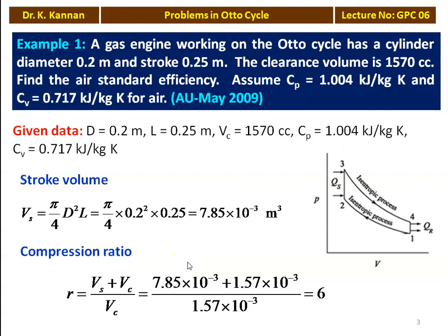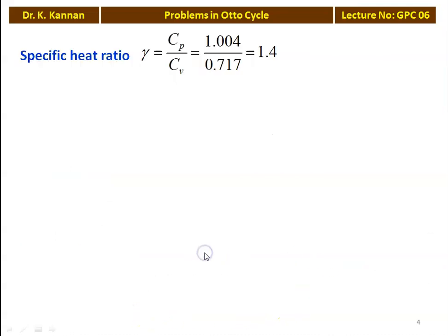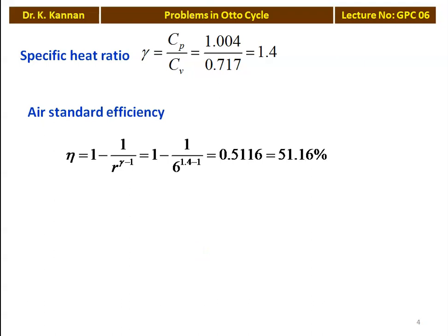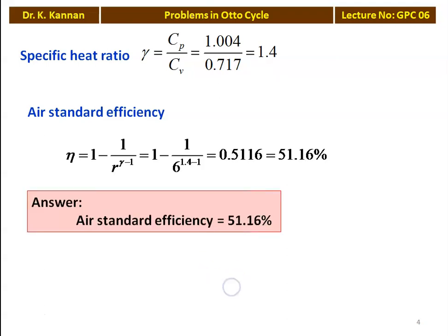We calculate the compression ratio R equals (Vs + Vc) / Vc. Vs equals 7.85 × 10⁻³ and Vc equals 1570 cc which is 1.57 × 10⁻³ m³. So compression ratio equals 6. The specific heat ratio gamma equals Cp/Cv equals 1.004/0.717 equals 1.4. Air standard efficiency eta equals 1 - 1/R^(gamma-1) equals 1 - 1/6^0.4 equals 0.5116, which is 51.16 percent.